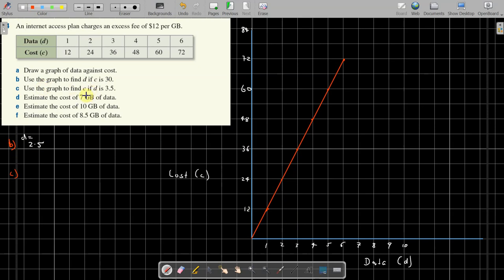Part c: use the graph to find c if d is 3.5. D is 3.5, up to there. That looks like it's halfway between 36 and 48, that's 42, 42 cents.